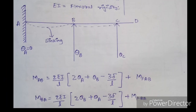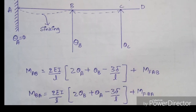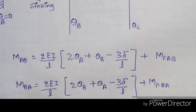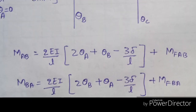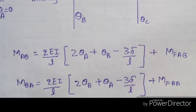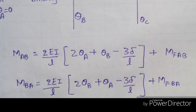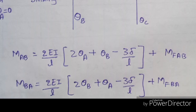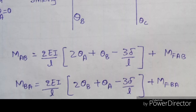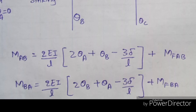In the slope deflection method, you have to remember two important formulas. One is: M_AB = (2EI/L)(2θ_A + θ_B − 3Δ/L) + MF_AB. And M_BA = (2EI/L)(2θ_B + θ_A − 3Δ/L) + MF_BA.